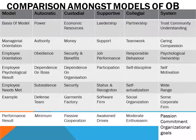In collegial the basis is partnership, and in systems it is trust, community, and understanding. Managerial orientation is authority, money, support, teamwork, and caring/compassion respectively. Employee orientation is obedience, security benefits, job performance, responsible behavior, and psychological ownership. Employee psychological results range from dependence on the boss in autocratic, dependence on the organization in custodial, participation in supportive, self-discipline in collegial, and self-motivation in systems. Employee needs met are subsistence, security, status and recognition, self-actualization, and a wide range of needs in the systems model.